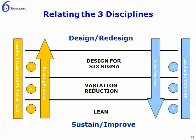Then if the process doesn't perform to expectations, you would go to the third set of tools, which is the DFSS tools — in other words, you can redesign the process. So when you've got an existing process, start with your lean tools, then go to the variation reduction tools, and then finally, if need be, go to the Design for Six Sigma tools.